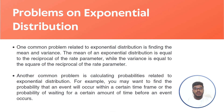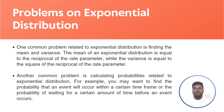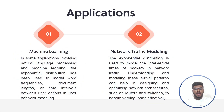We are going to discuss problems based on the exponential distribution. One common problem is finding the mean and variance — the mean of an exponential distribution equals the reciprocal of the rate parameter lambda, while the variance equals the square of the reciprocal of the rate parameter. Another common problem is calculating probabilities, such as finding the probability that an event will occur within a certain time frame or the probability of waiting a certain amount of time before an event occurs.